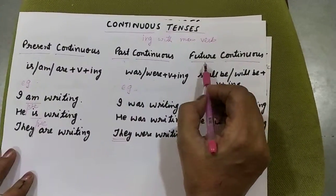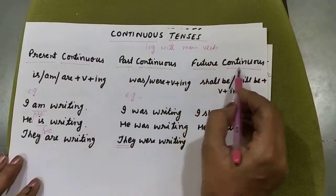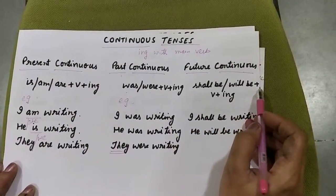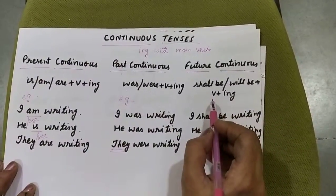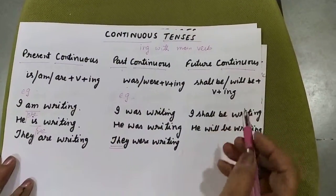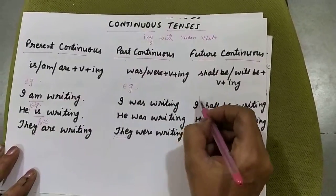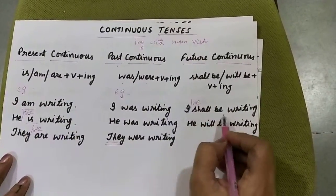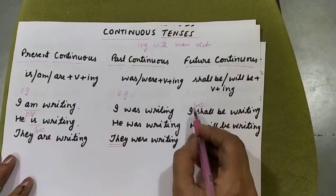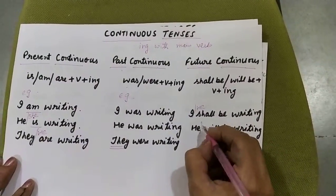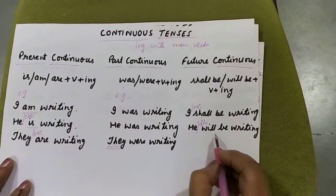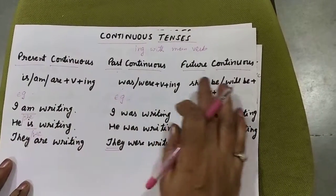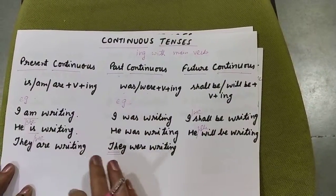Now we will move on to future continuous. In future continuous, we use 'shall be' or 'will be' plus the main verb with '-ing' added. With I and we, we use 'shall'. So 'I shall be writing' or 'we shall be writing'. With he, she, it, we use 'will'. So 'he will be writing' or 'she will be writing'. This is all about the continuous tenses.